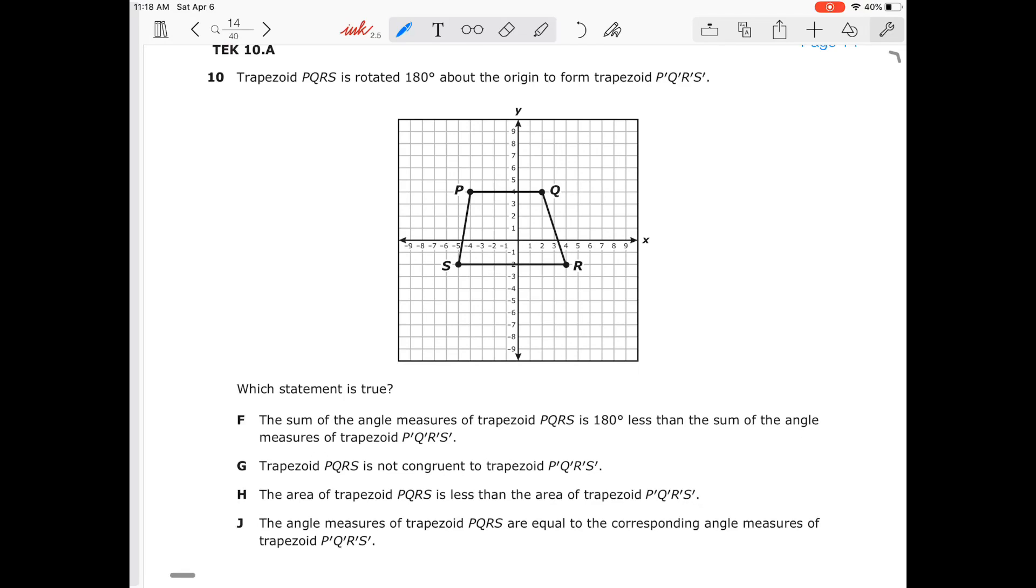Number 10. The trapezoid PQRS is rotated 180 degrees about the origin to form the new trapezoid. Let's look at our statements. And it wants to say which of the statements is true. Make sure that you are paying attention to whether or not they're asking if it's true or not true because they really like to ask those questions. So we're looking for true. The sum of the angle measures of the trapezoid is 180 degrees less than the sum of the angles of the measures of the trapezoid, the image, that's false. The trapezoid is not congruent. That's again false. Whenever we're transforming it or translating it, all of the interior angles will be congruent. The area of the trapezoid is less than the area of the image. That again is false. The last one says the angle measures of the trapezoid are equal to the corresponding angle measures of the image. Yes, that is true. That is the only possible answer choice.